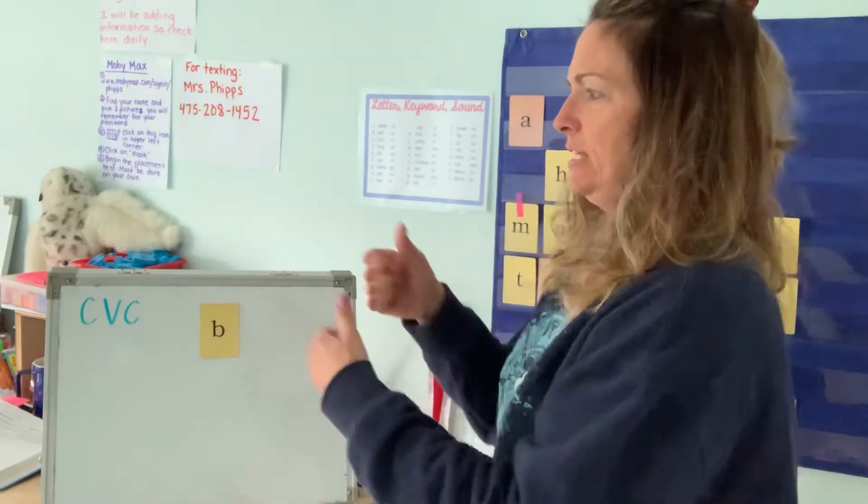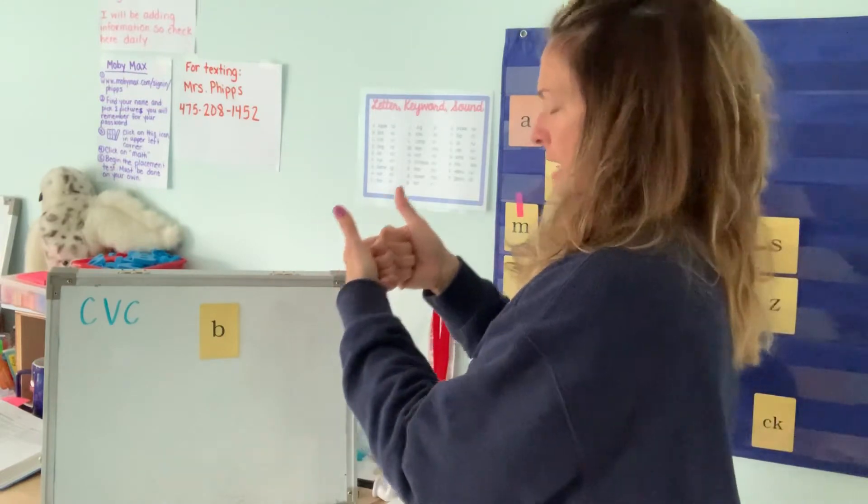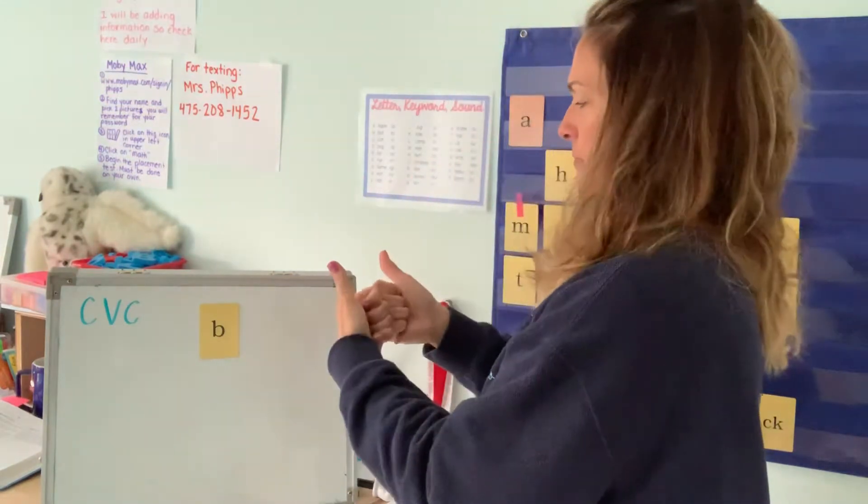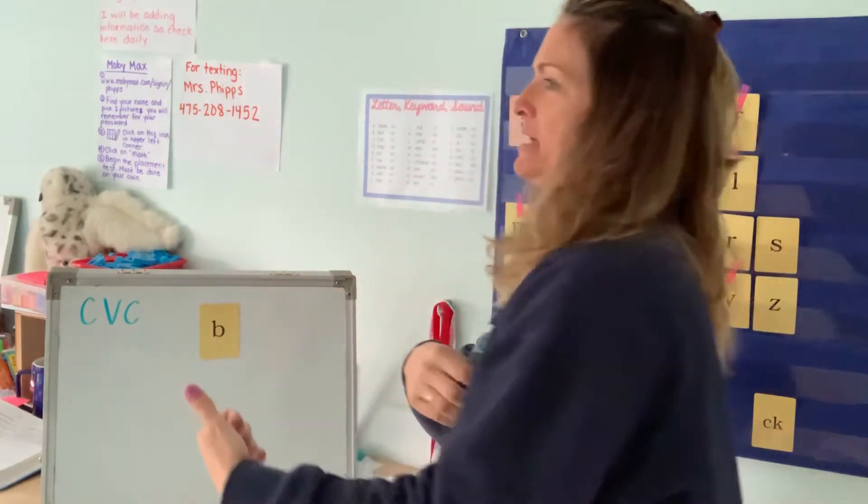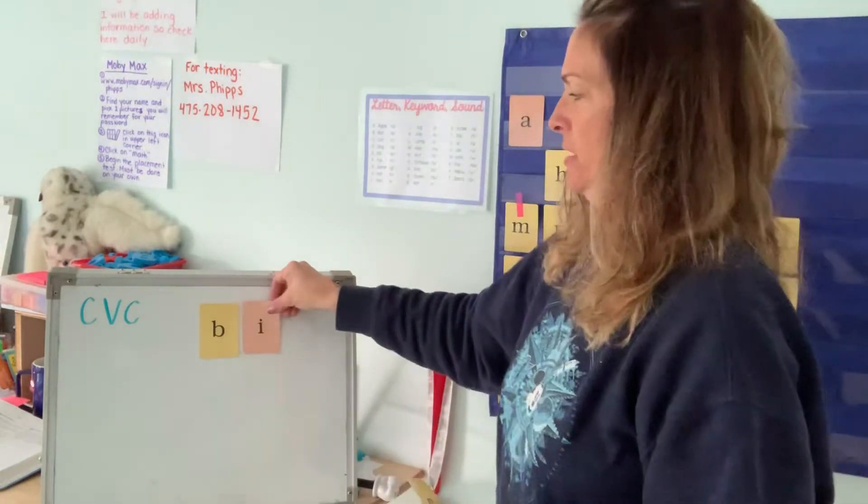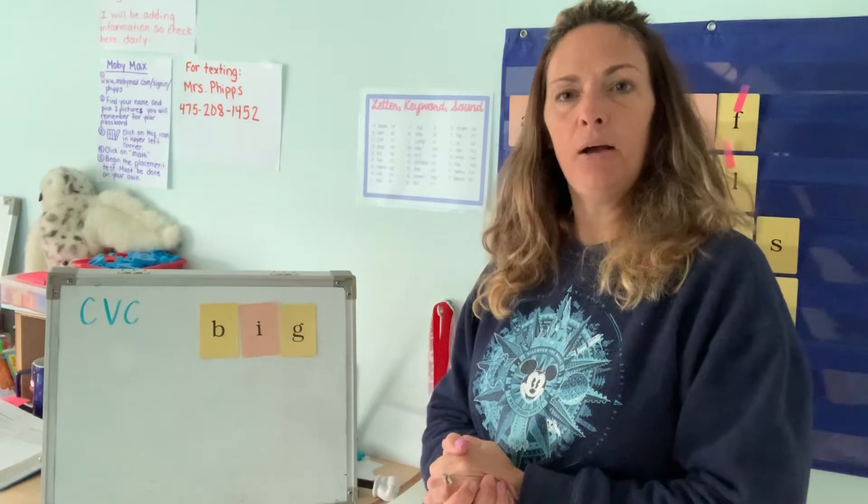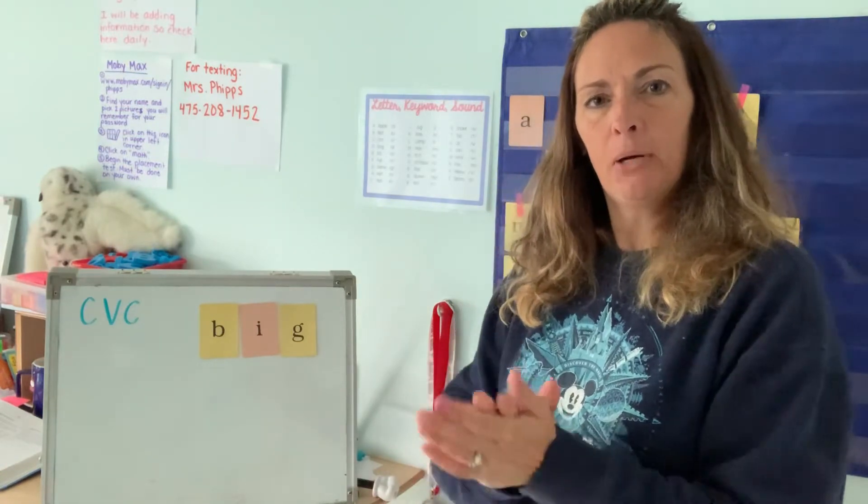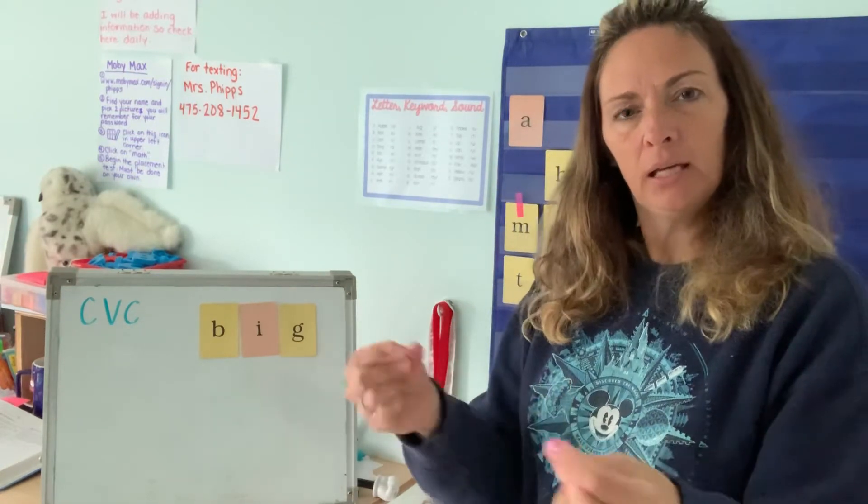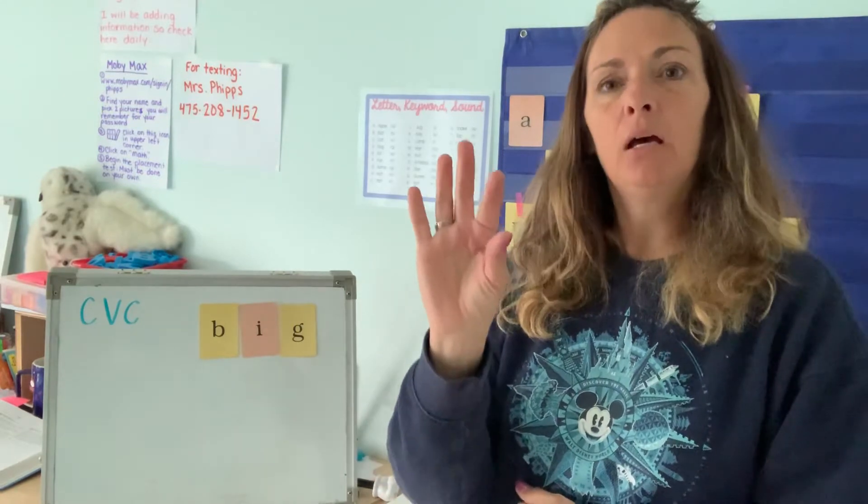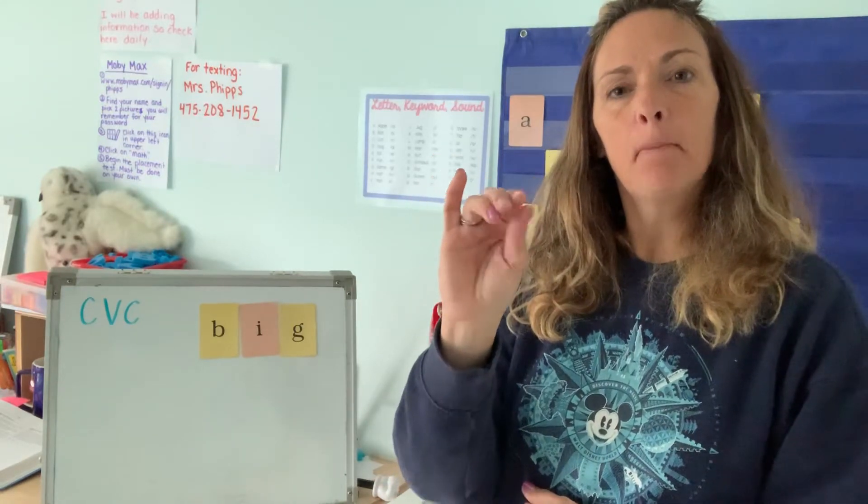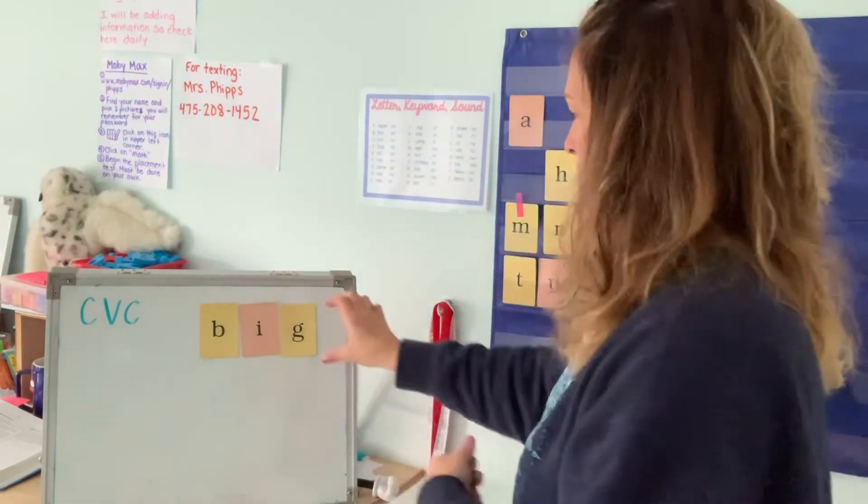Oh, is that a B or a D? Make your bed, take a nap, and look up. It is a B. B-I-G. Can we clap, snap, stomp? B-I-G. B-I-G. Or you could tap. B-I-G. Big. You got it. Good job.